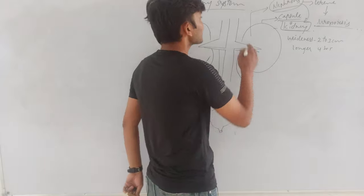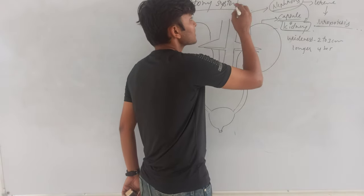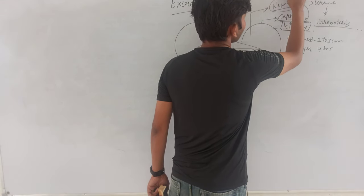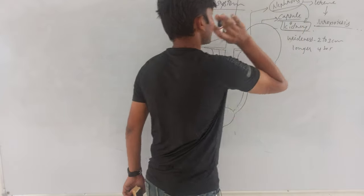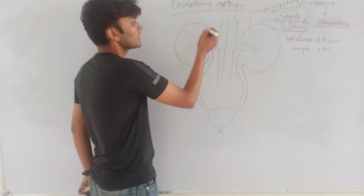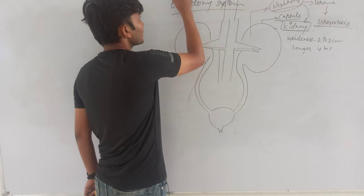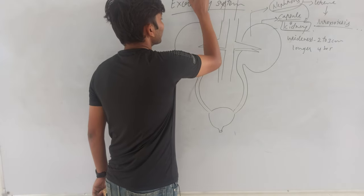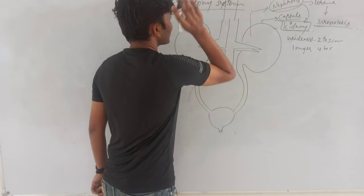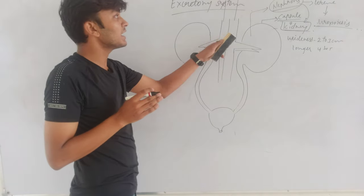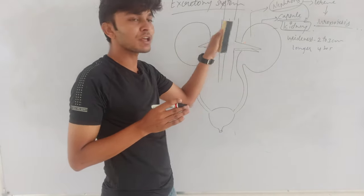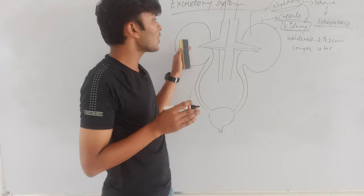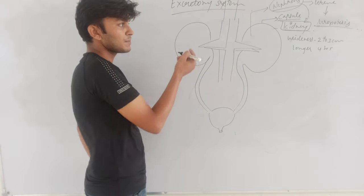The tube-like structures connected to the kidney are known as renal arteries. The structures that carry blood from the heart to the kidney are renal arteries, and those that carry blood away from the kidney are known as renal veins. Through renal arteries, oxygenated blood enters the kidney, and through renal veins, purified deoxygenated blood leaves the kidney.